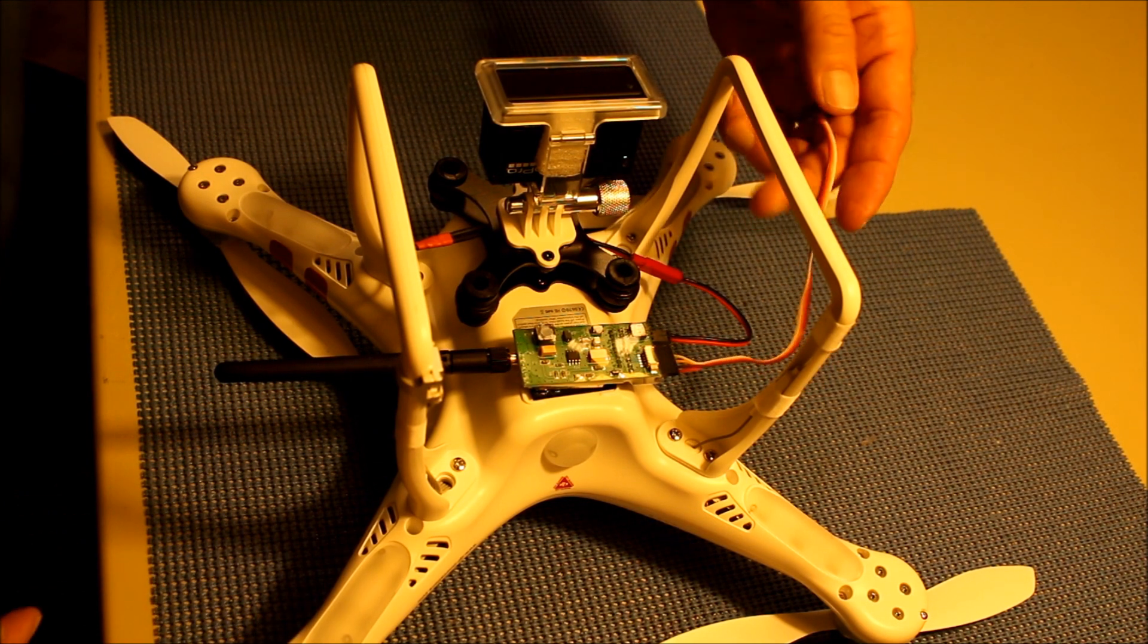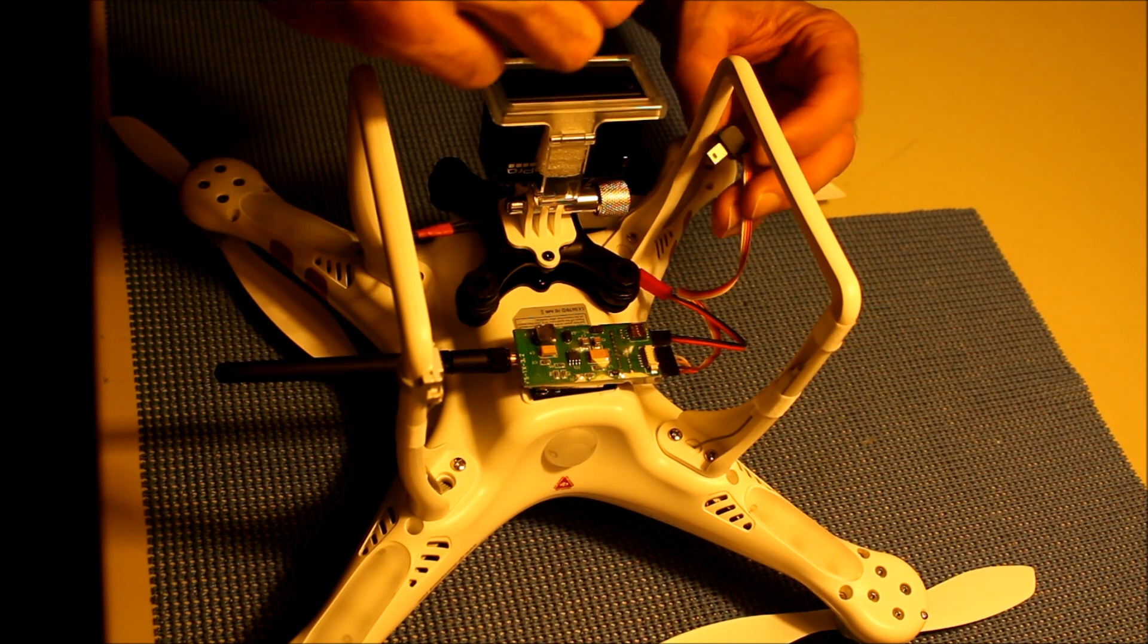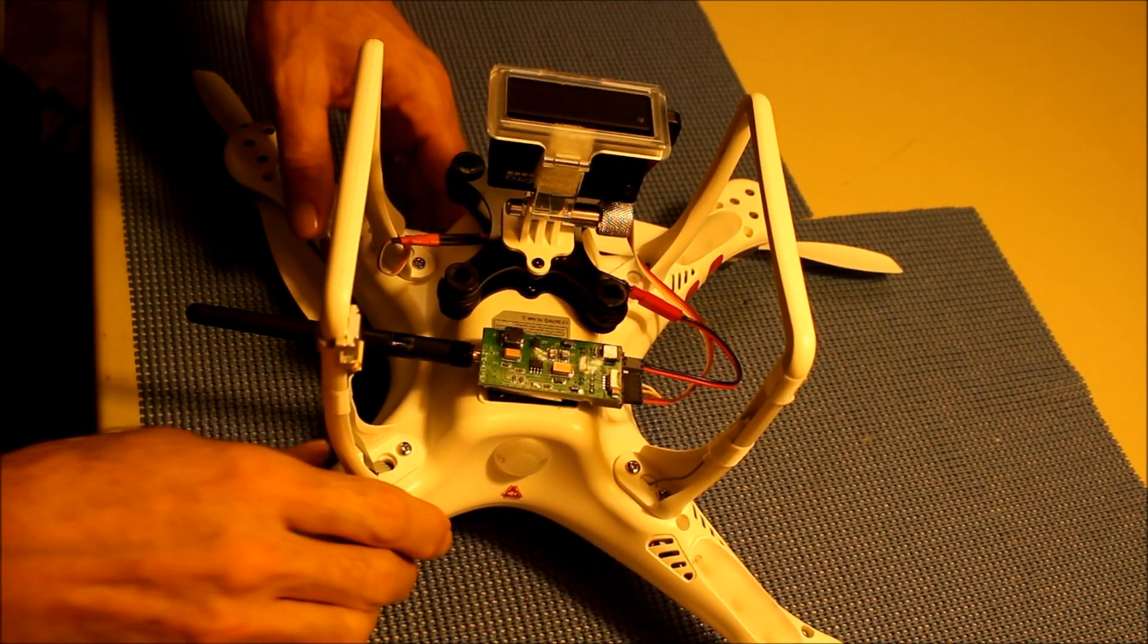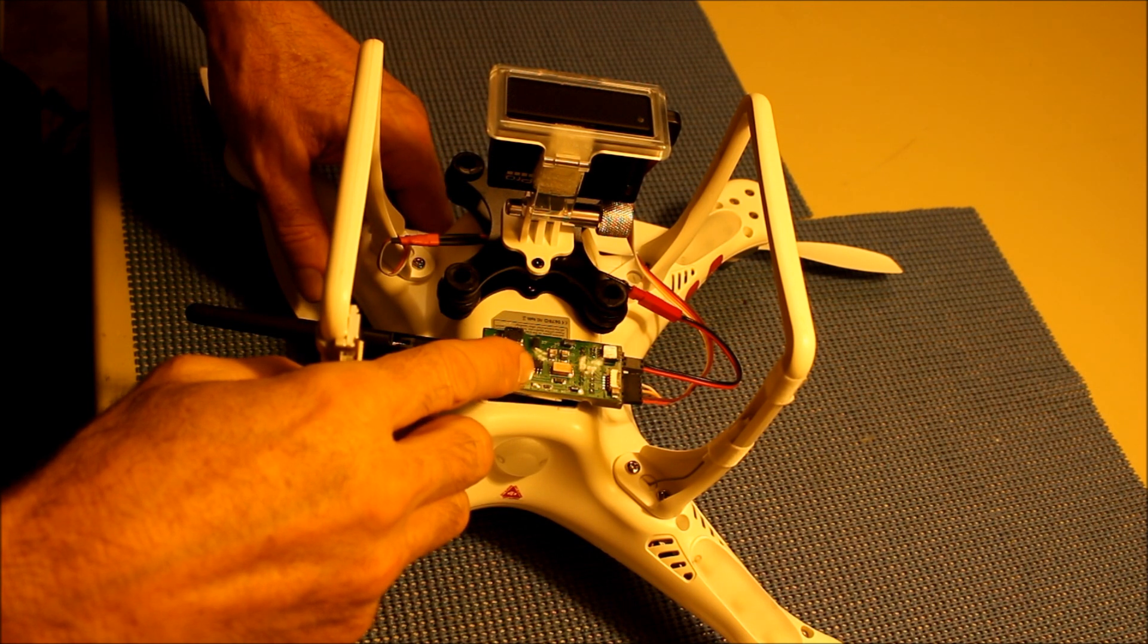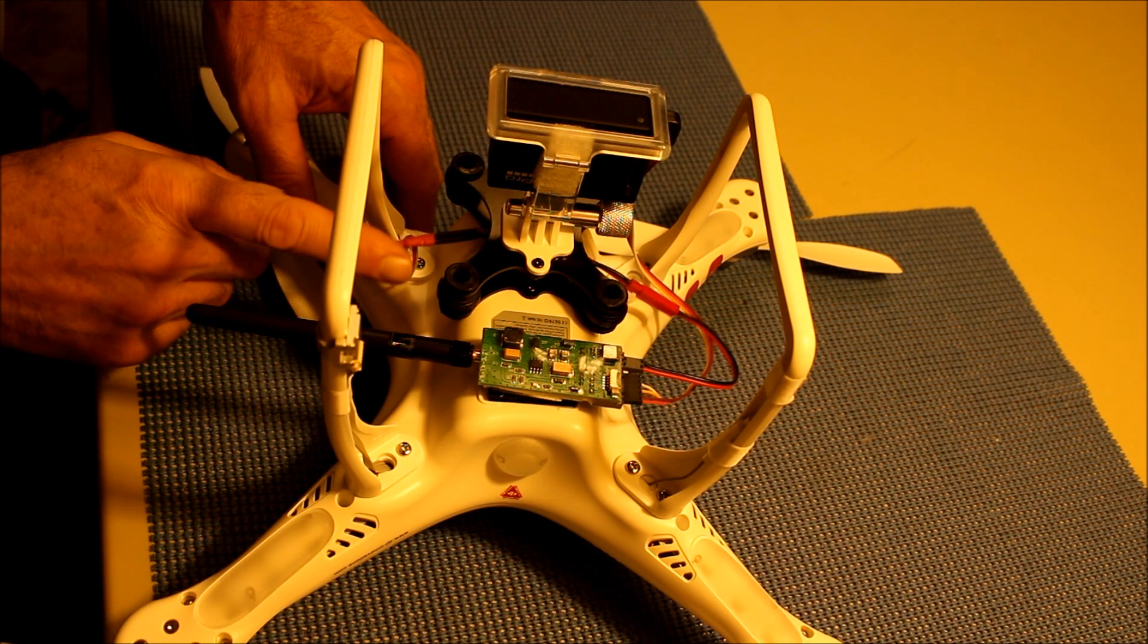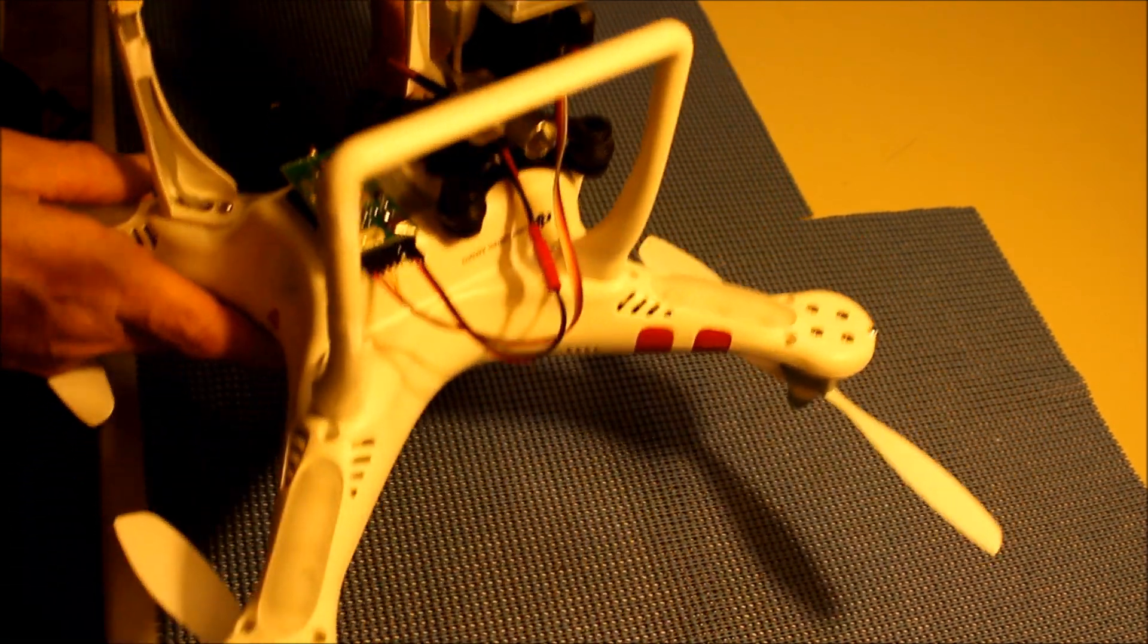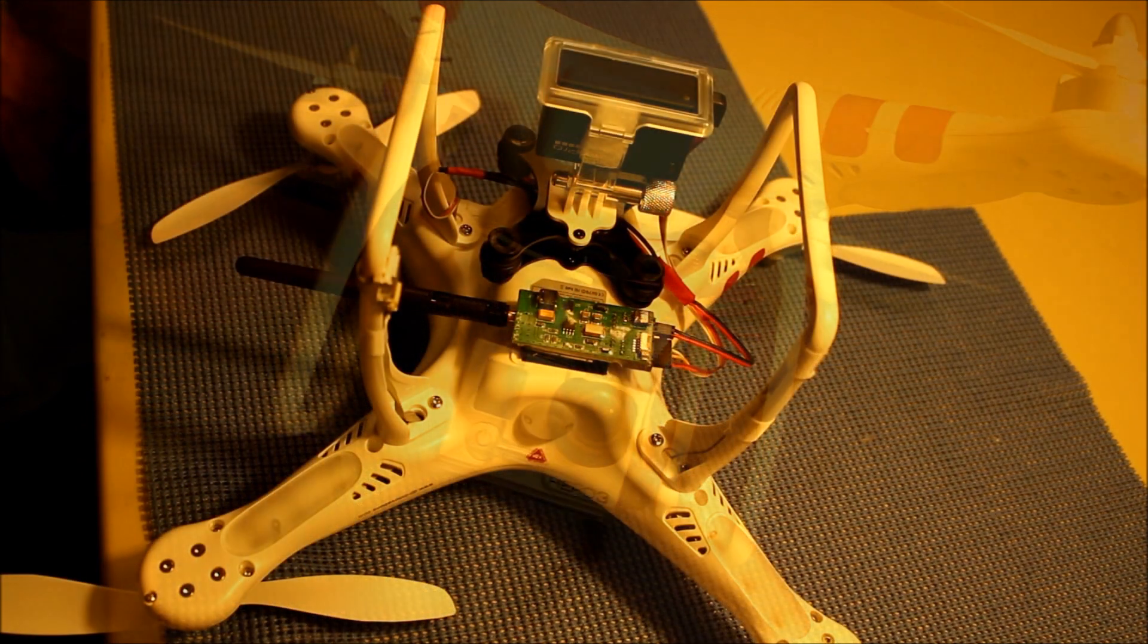The other connector is to the Hero 3 camera. That plugs into the USB port. So we're all set. Here's the finished product. We have the transmitter mounted on the bottom of the quadcopter with its power cable from the auxiliary power cable of the quadcopter. The quadcopter itself and we have the signal cable going to the USB port on the Hero 3 camera. Here's the completed unit.